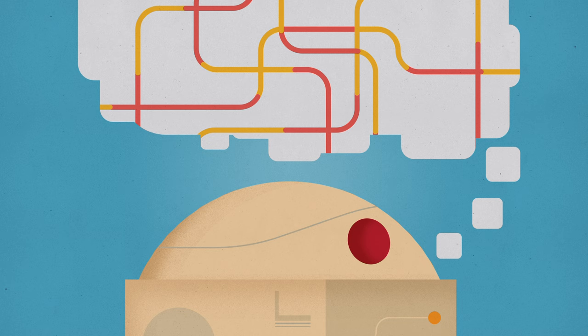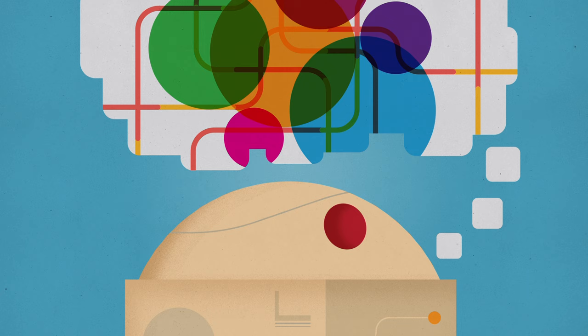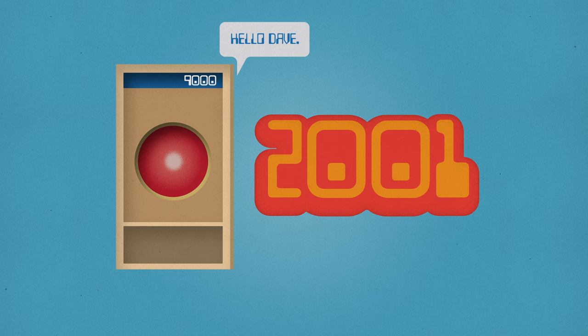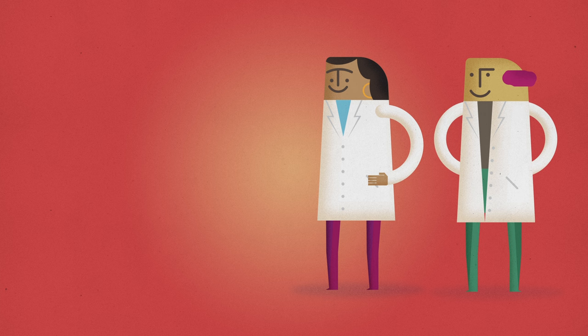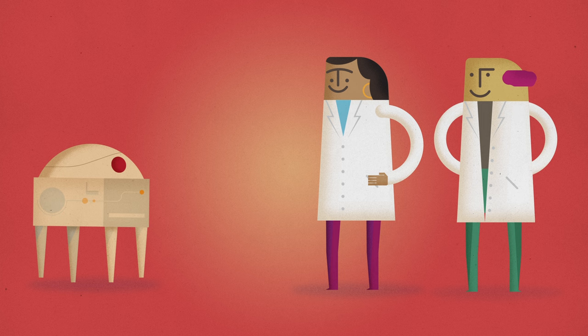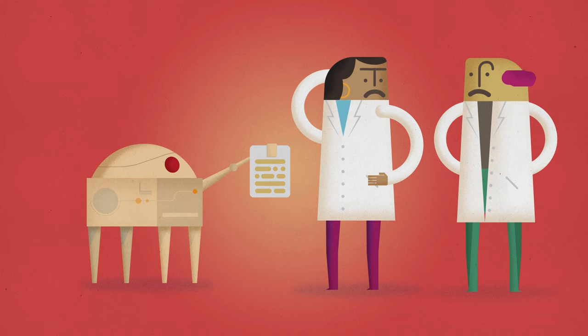According to Lovelace, a machine must be able to create original ideas if it is to be considered intelligent. The Lovelace test, formalized in 2001, proposes a way of scrutinizing this idea. A machine can pass this test if it can produce an outcome that its designers cannot explain based on their original code.